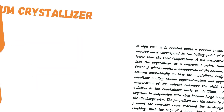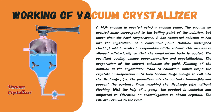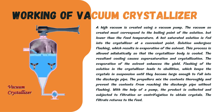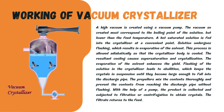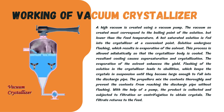Now let's understand the working of vacuum crystallizer by dividing the procedure into stages. First is high vacuum creation: a vacuum pump is used to create a high vacuum in the crystallizer. For example, in a chemical plant, a vacuum pump might be used to reduce the pressure inside the cylindrical vessel.